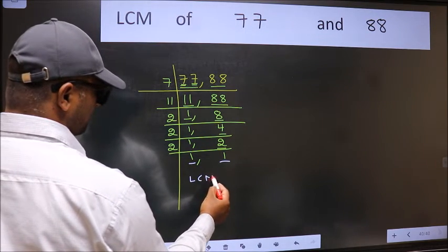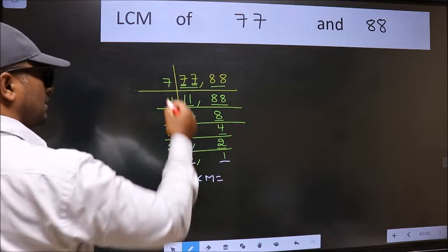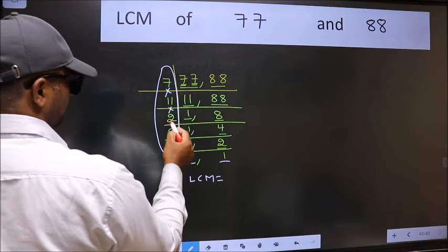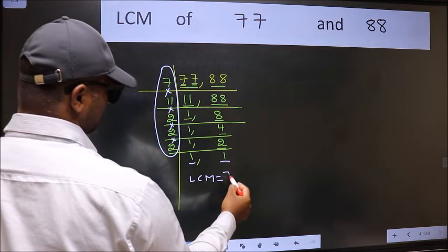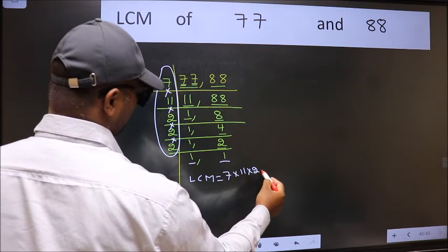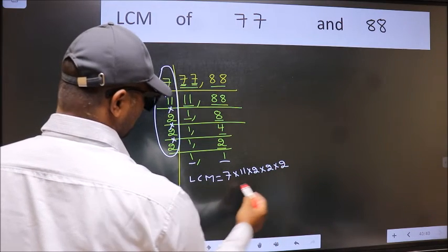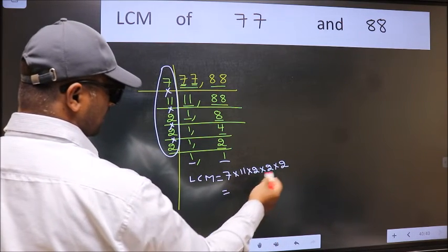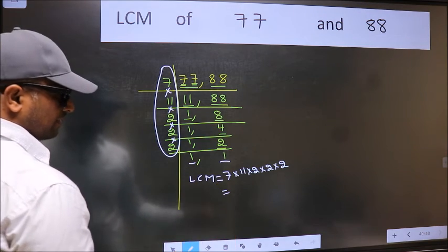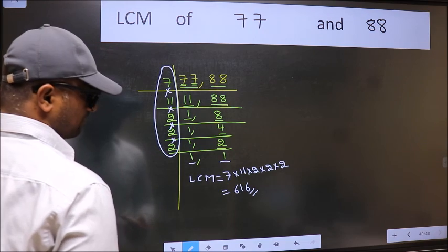So our LCM is the product of these numbers: 7 times 11 times 2 times 2 times 2 times 2. When we multiply these numbers we get 616, which is our LCM.